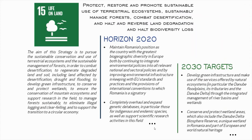Strategy Goal No. 15 — Life on Land — aims to protect, restore and promote sustainable use of terrestrial ecosystems, sustainably manage forests, combat desertification, and halt and reverse land degradation and biodiversity loss. The Strategy pursues the sustainable conservation and use of terrestrial ecosystems and sustainable management of forests to combat desertification, regenerate degraded land and soil, develop green infrastructure, conserve and protect wetlands, ensure the conservation of mountain ecosystems, manage forests sustainably, eliminate illegal logging, and support the transition to a circular economy.